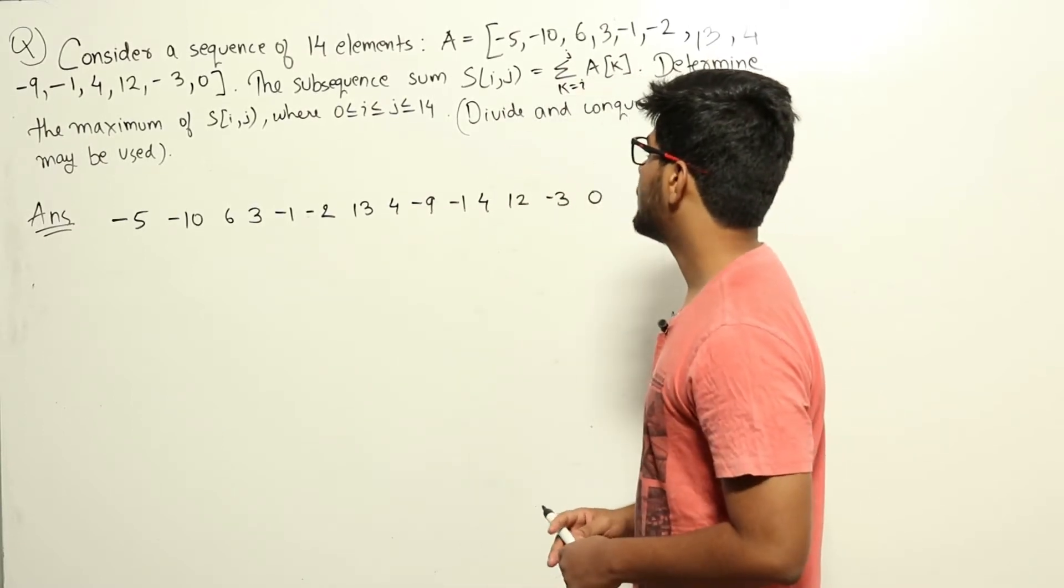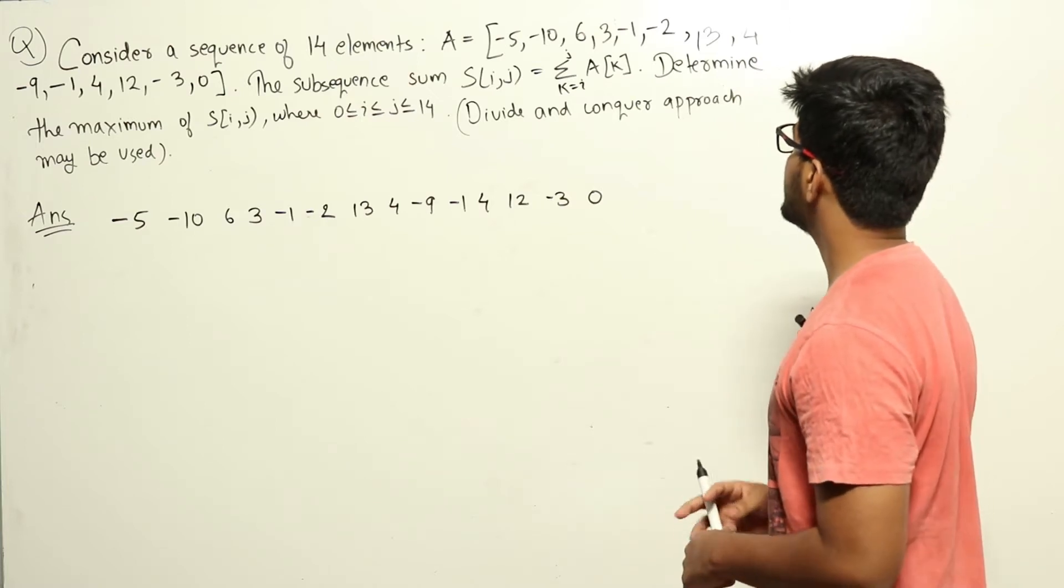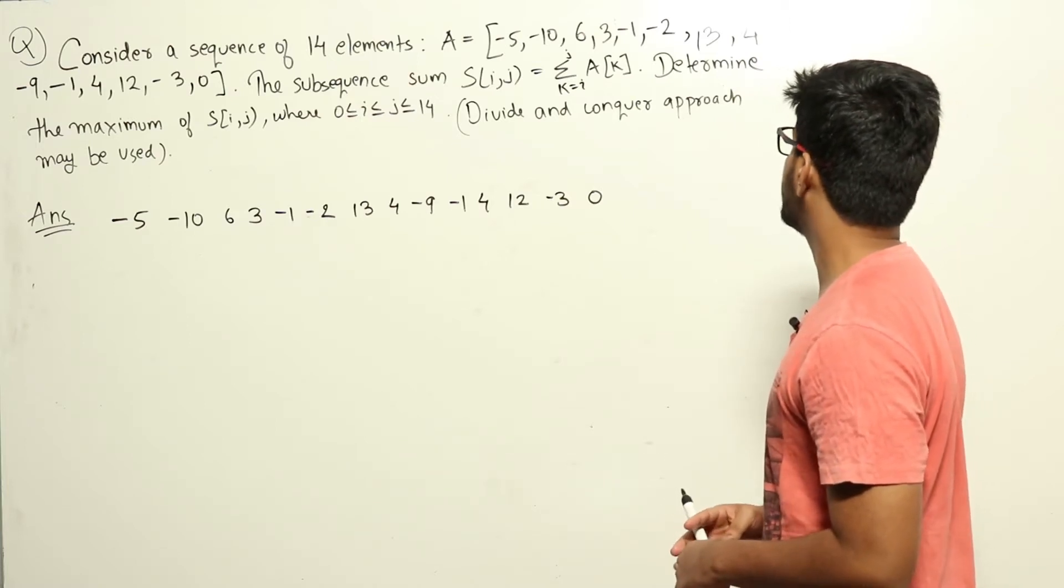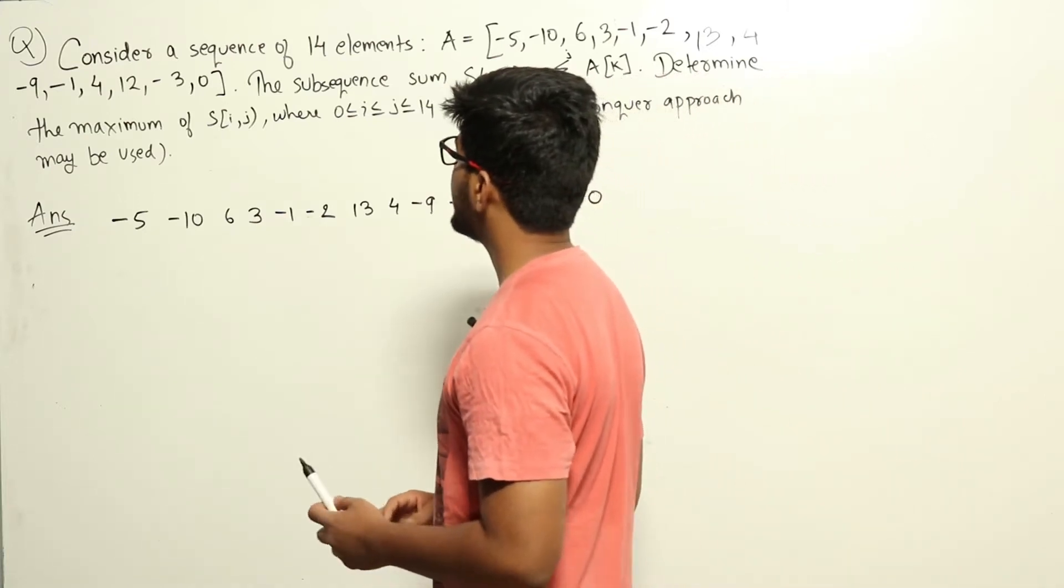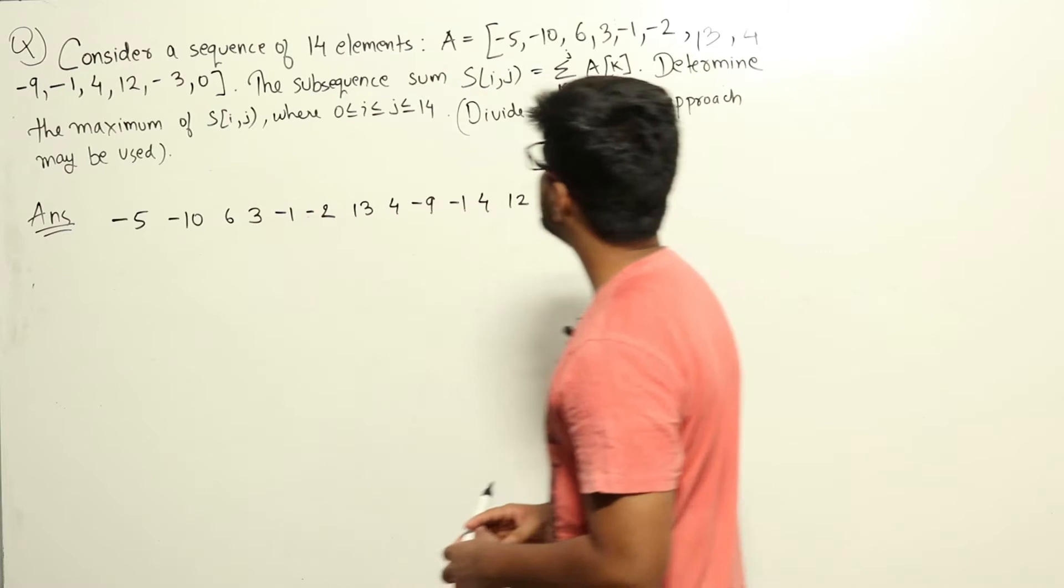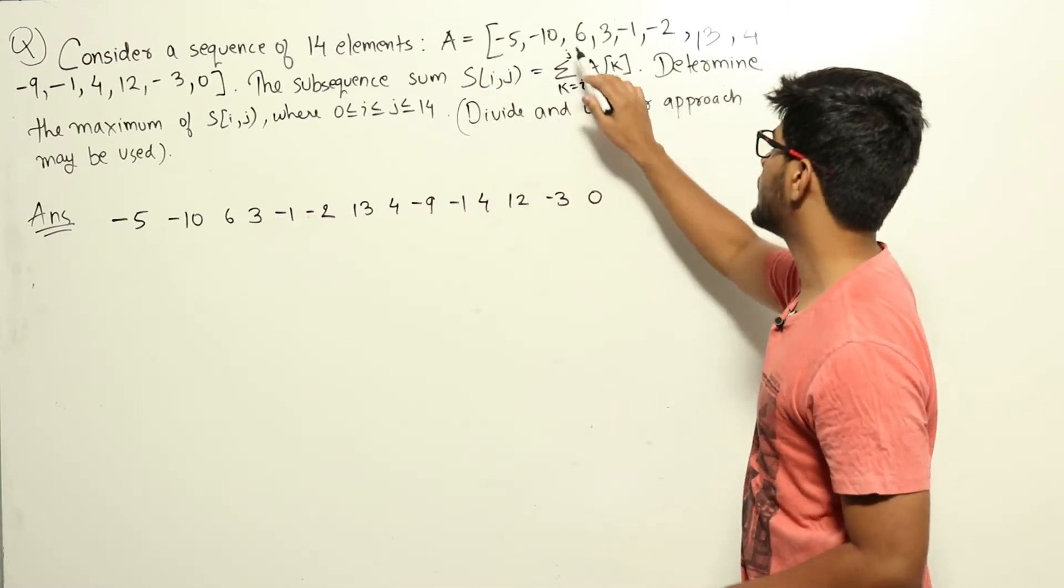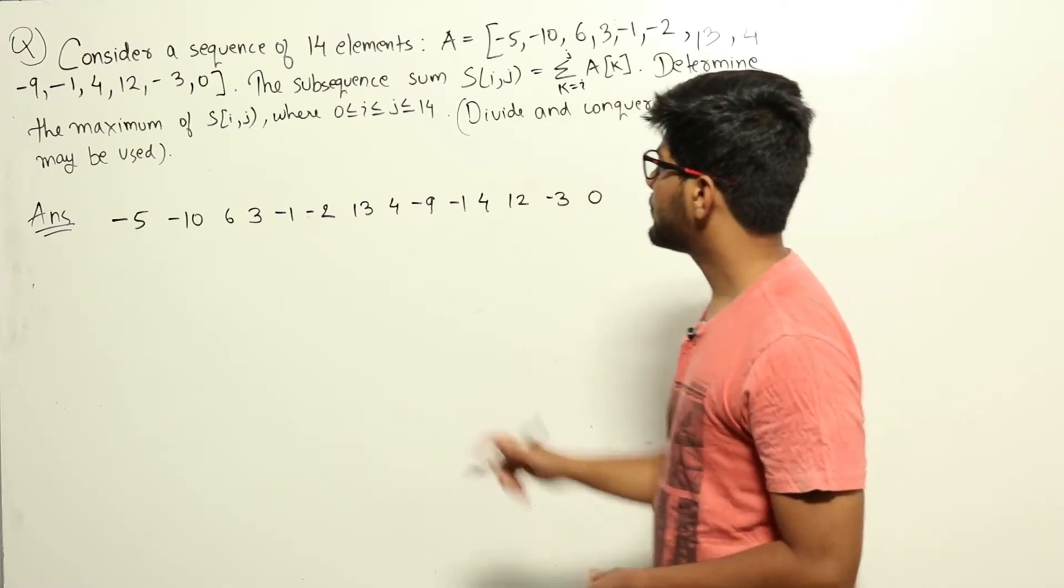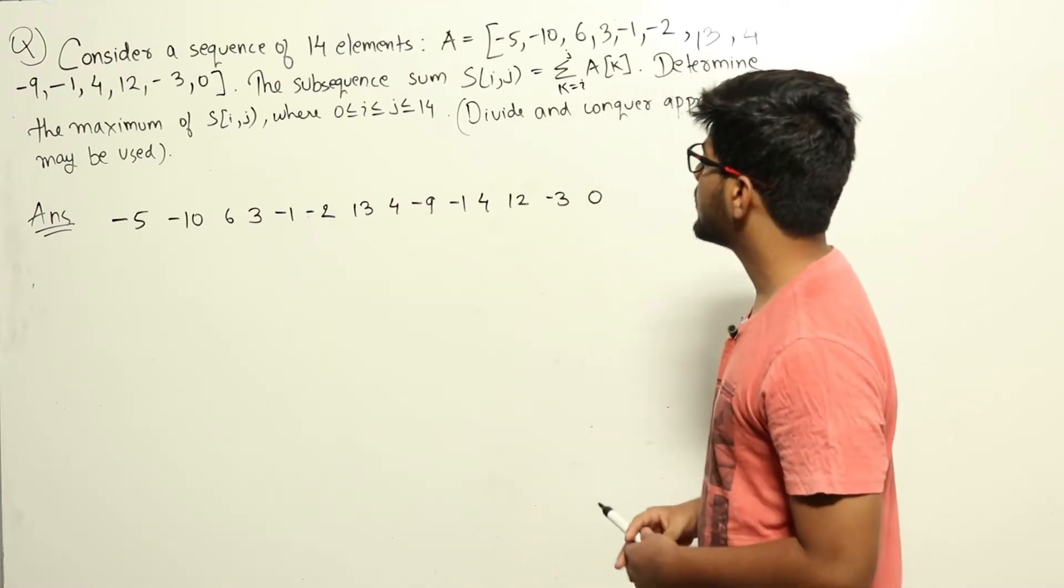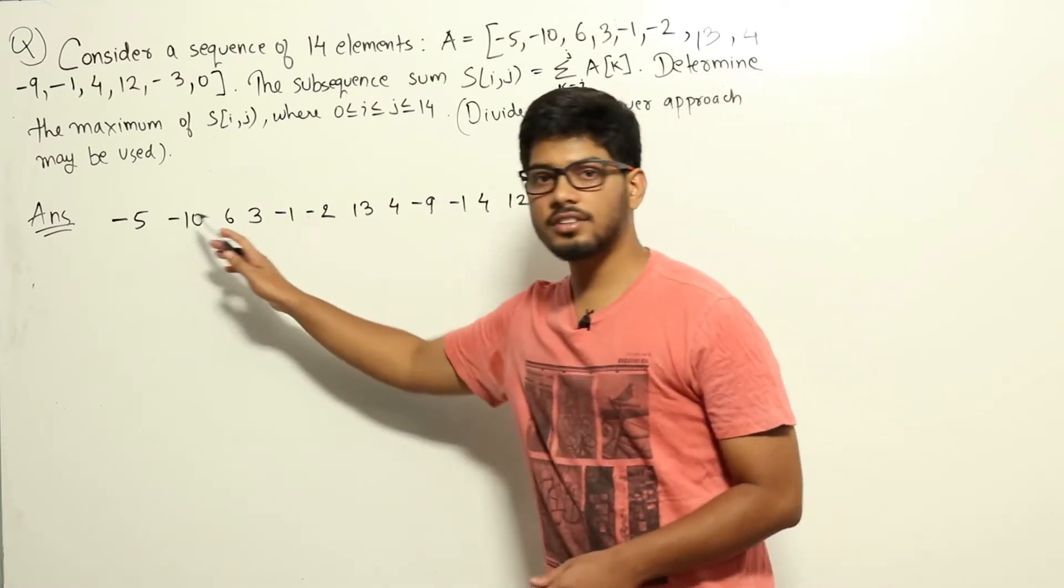Consider a sequence of 14 elements A equal to the sequence: -5, -10, 6, 3, -1, -2, 13, 4, -9, -1, 4, 12, -3, 0. The subsequence sum S(i,j) equals sigma k equal to i to j A(k). Determine the maximum of S(i,j) where 0 less than or equal to i less than or equal to j less than or equal to 14.